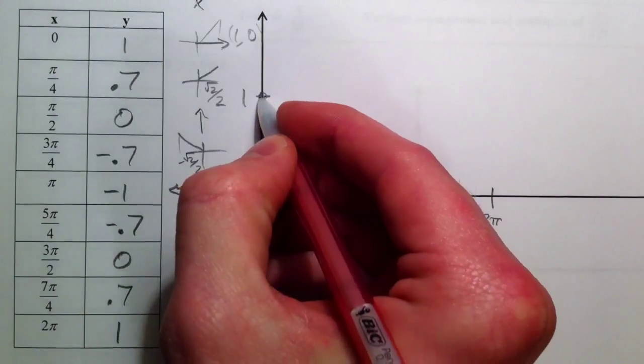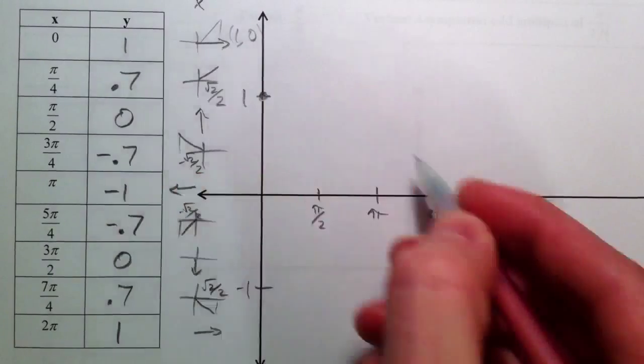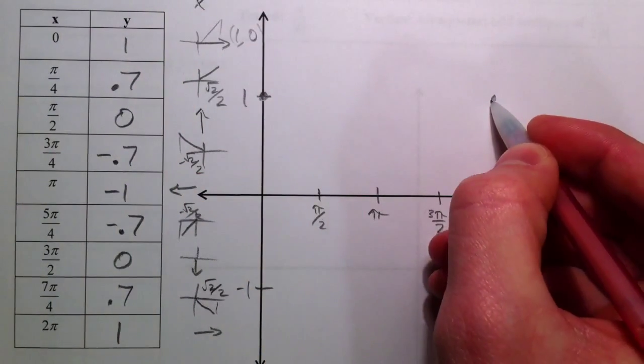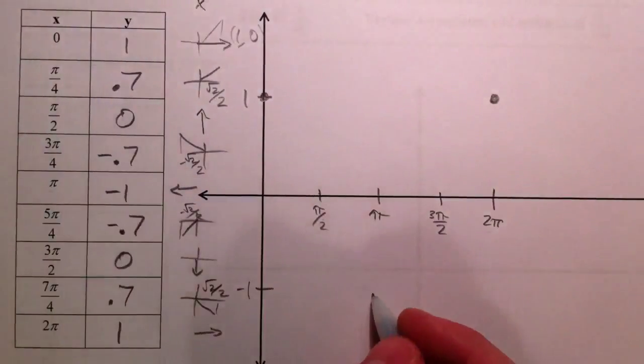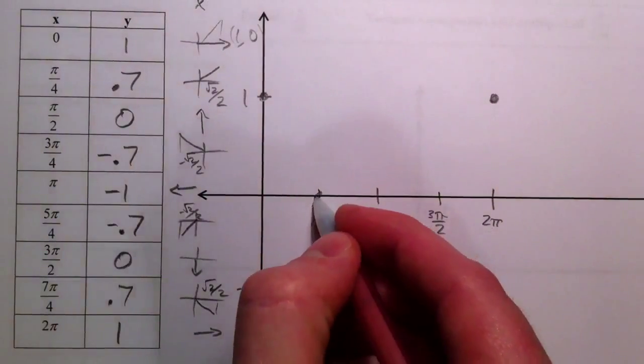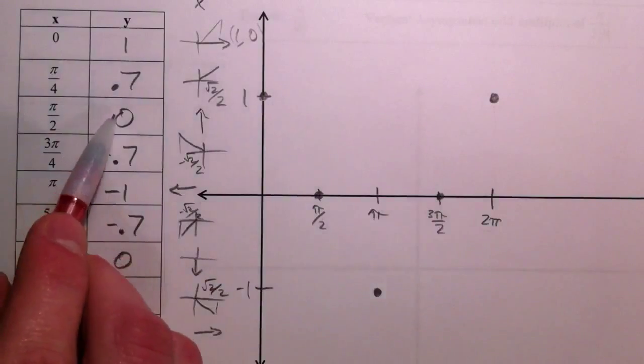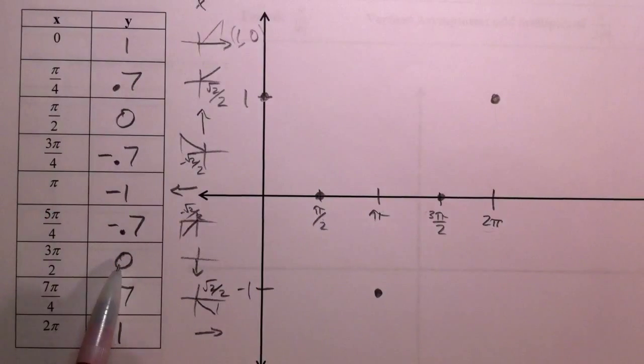So we started at the peak, started at 1, and ended at 1. And then halfway in between, we had pi. Halfway in between each of those, at pi over 2 and at 3 pi over 2, we had 0.